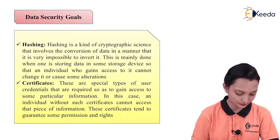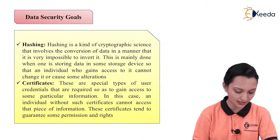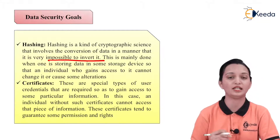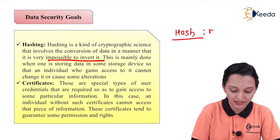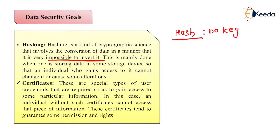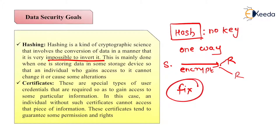In integrity, the next concept is hashing. Hashing is a kind of cryptographic science that involves conversion of data in a manner that it is very impossible to invert. Why? Because hash is a kind of algorithm that uses no key to encrypt or decrypt the data — that is nothing but one-way communication. The user will encrypt the data and send it to the receiver. The receiver is not allowed to decrypt the data; the fixed data is transmitted. Hence, it is very impossible to convert or invert the data — because data is fixed and it is a one-way communication.